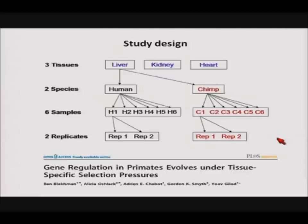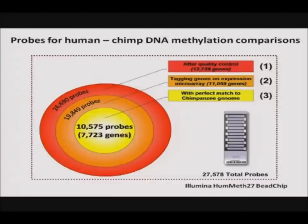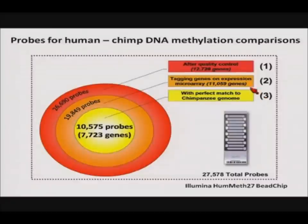The choice of this study design was motivated by the fact that we already have gene expression data from a previous study in our lab that used a multi-species microarray to investigate intertissue gene expression levels between humans, chimps, and rhesus macaques. Since the Illumina methylation assay was specifically designed for human samples, we accounted for probe sequence composition by only including probes with a perfect match to the chimpanzee genome. Our final set of probes tagged just under 8,000 genes distributed across the genome. Note that this array interrogates methylation at CpG islands upstream of transcription start sites — so throughout this talk, I'm focusing exclusively on promoter methylation.